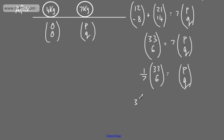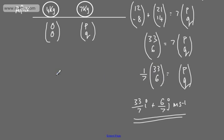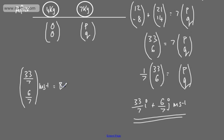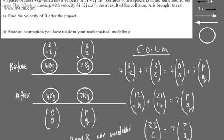So we can write one seventh of (33, 6) equals (p, q). That gives us the velocity of B after the collision as 33/7 i plus 6/7 j meters per second. For part B, the assumption we've made is that A and B are modelled as particles — modelled as particles — and that will give you one mark in an exam.